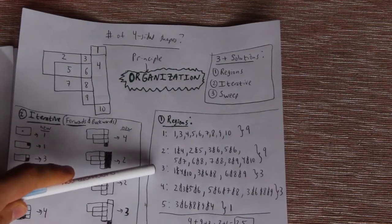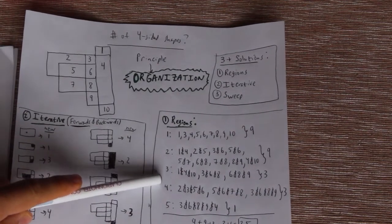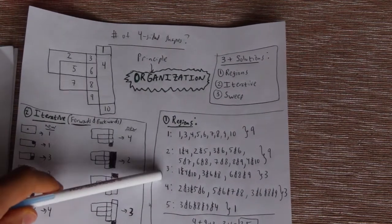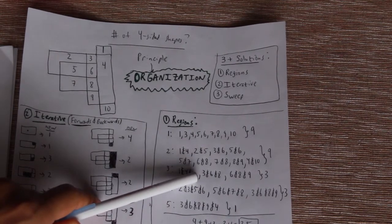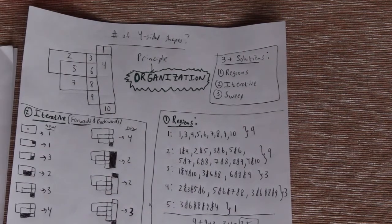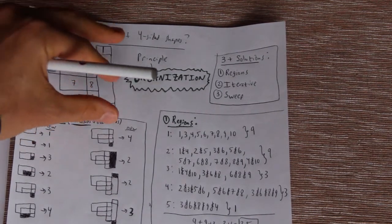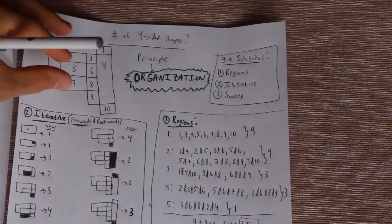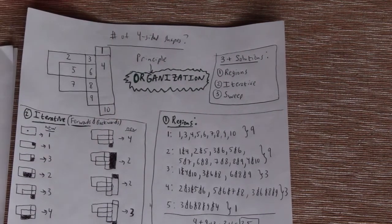Now we go to four-sided shapes with three regions. That's going to be: one, four and ten; three, six and eight; and six, eight and nine. So we just take these skinny rectangles — three of them total.